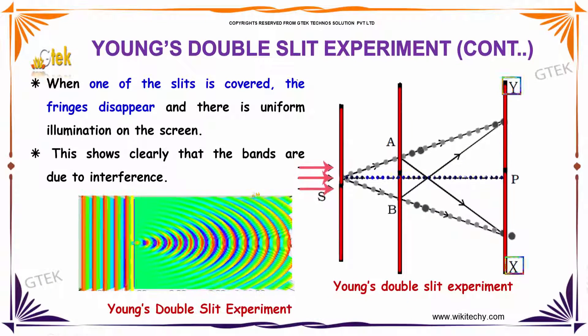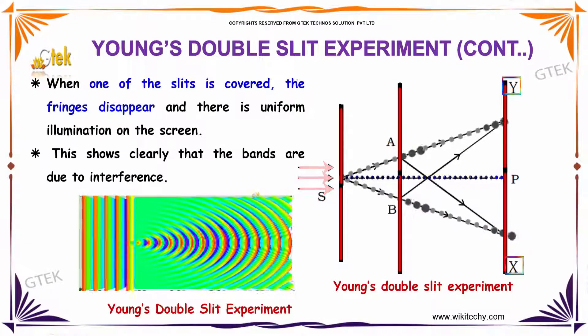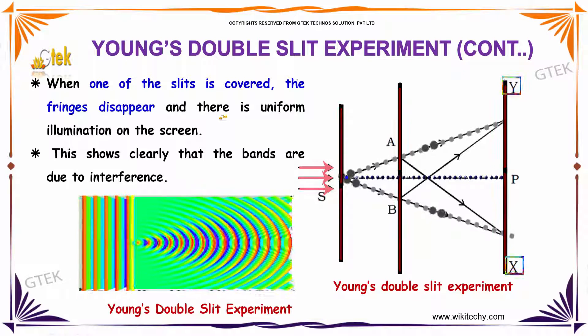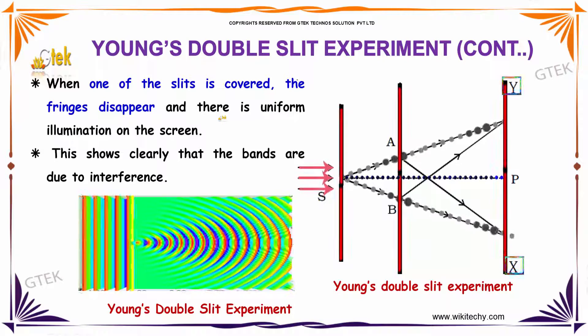When one of the slits is covered, the fringes disappear and there is uniform illumination on the screen. This clearly shows that the bands are due to interference.